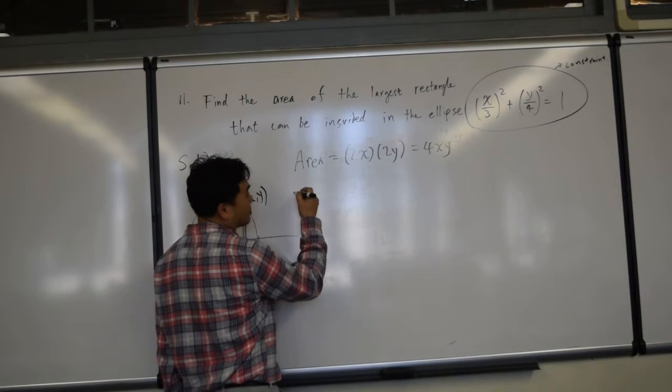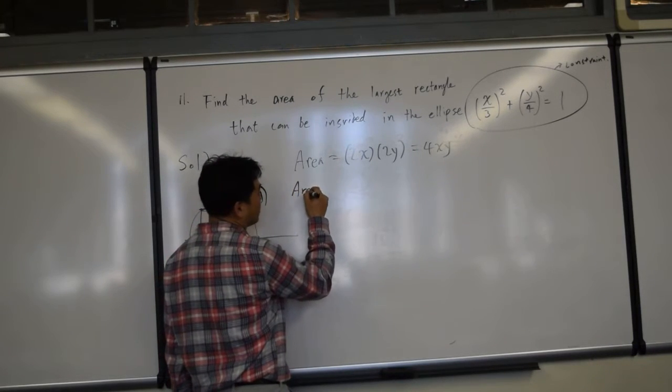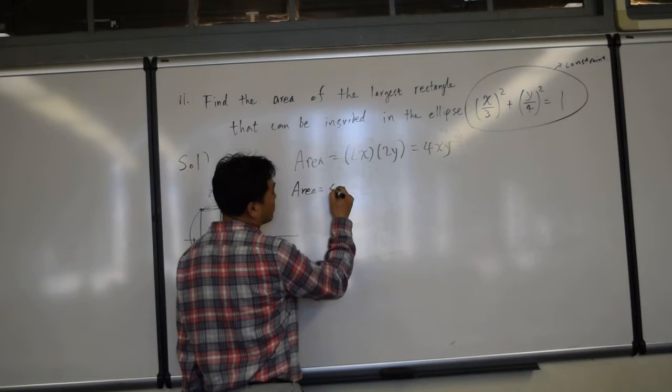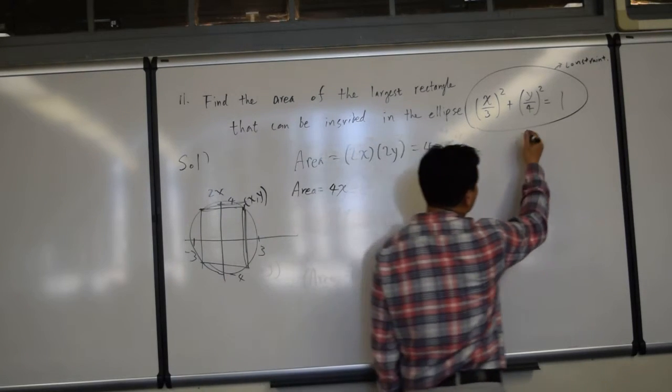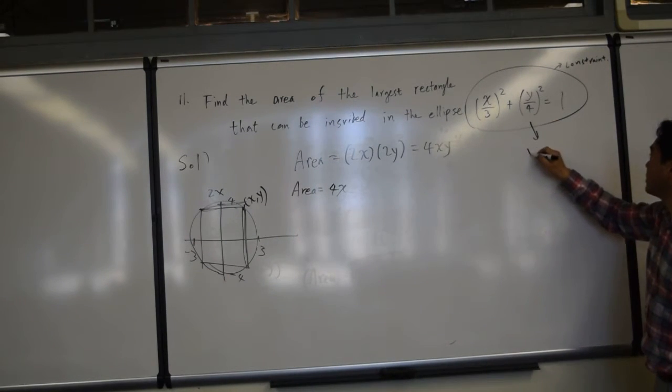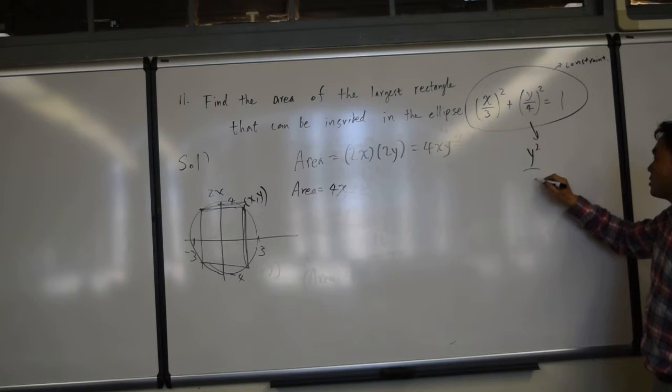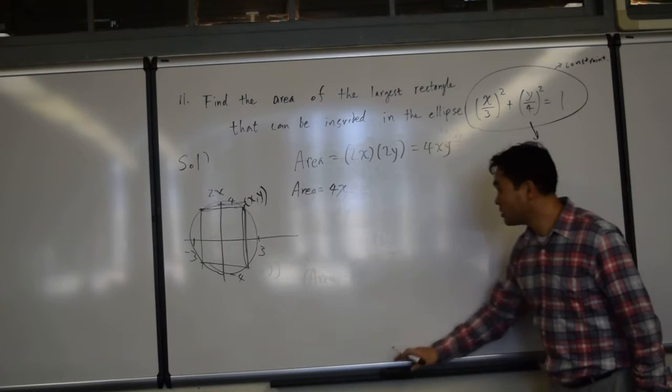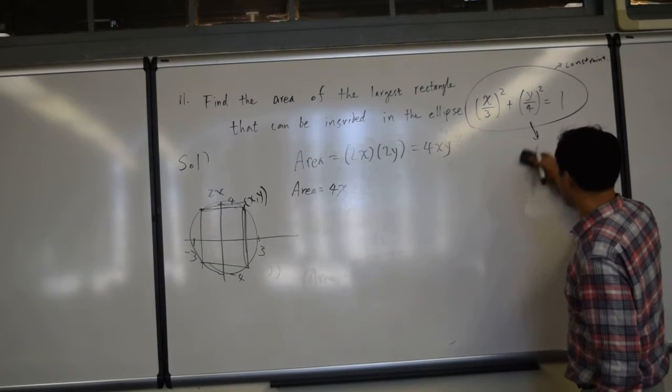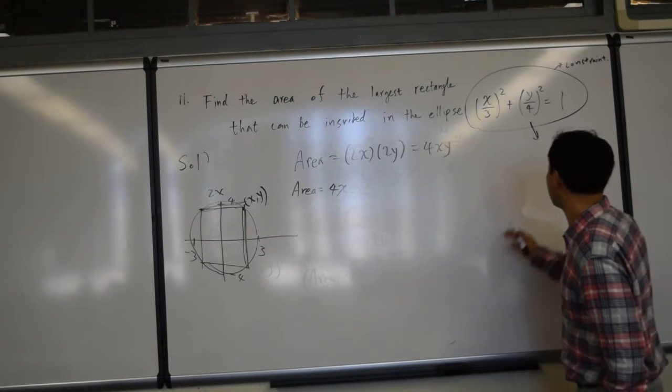So let's see. Area is equal to 4x. Now, if you solve this for y... actually, let's solve this for x. I think if you solve for x, it's slightly easier. So let's solve for x.